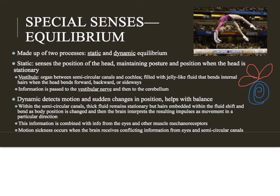The semicircular canals look like three hoops. One lies on the x-axis, one on the y-axis, and the third on the z-axis or diagonal. They're also filled with fluid. Whenever the head moves, the fluid within those canals moves as well, and that movement shifts tiny hairs within the semicircular canals. As those hairs bend — for example, if you lean your head down to tie your shoe — it tells the brain through the vestibular nerve which way the head is moving.